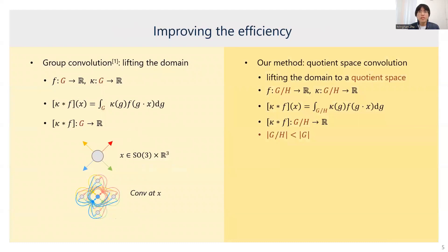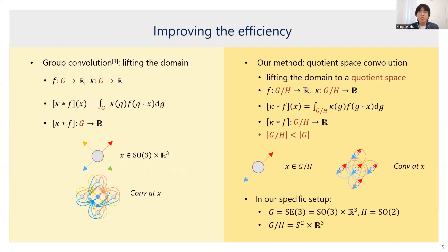To improve the efficiency, we propose to only lift the domain to the quotient space of the group, denoted by G mod H, where H is the subgroup. The quotient space can be roughly understood as a fraction of the group G, and therefore the computational complexity can be much reduced. Specifically, in our problem, G is the SE3 group — the set of all 3D rotations and translations. We select H to be SO2, the planar rotations. The resulting quotient space is the product of a 2D unit sphere S2 and 3D Euclidean space R3.